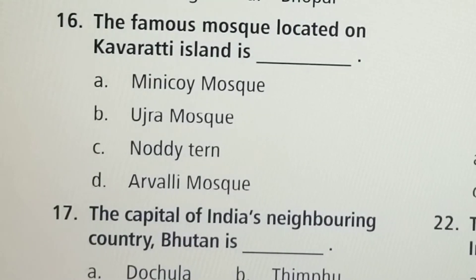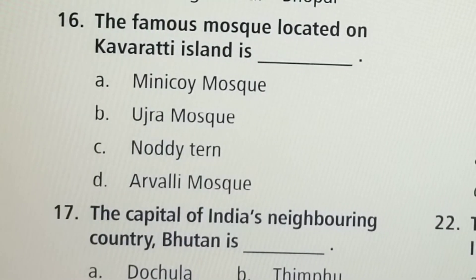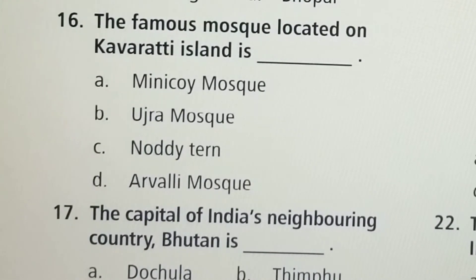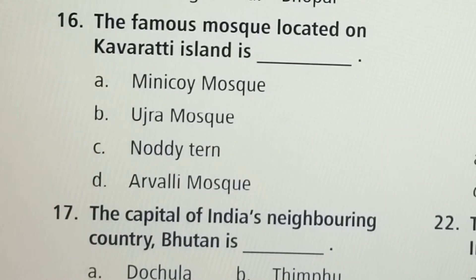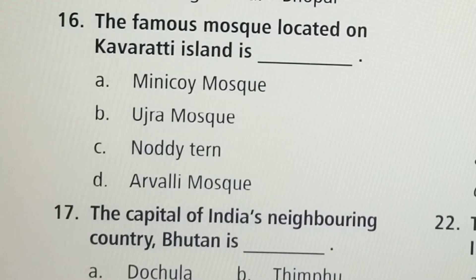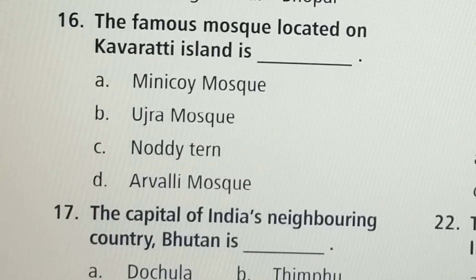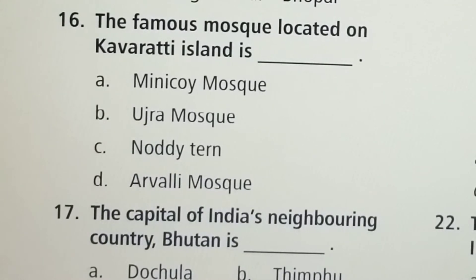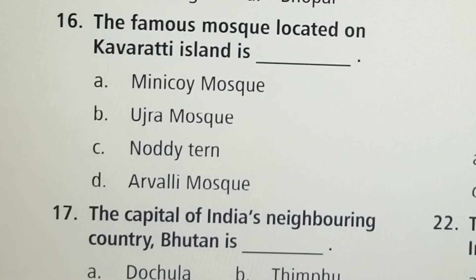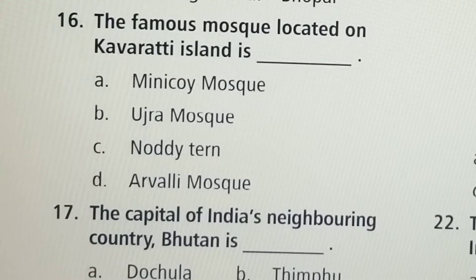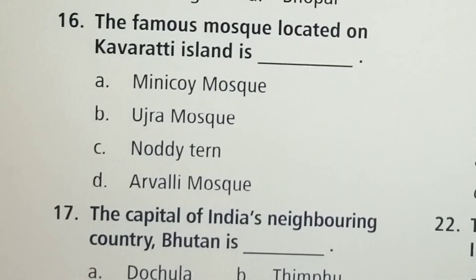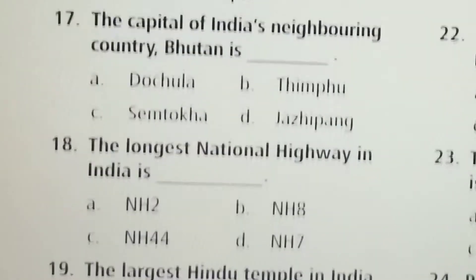Next question: The famous mosque located on Kavaratti Island is — Option A: Minikoi Mosque, Option B: Ujra Mosque, Option C: Ujra Mosque, Option D: Arwalne Mosque. Option B, Ujra Mosque, is the correct answer.